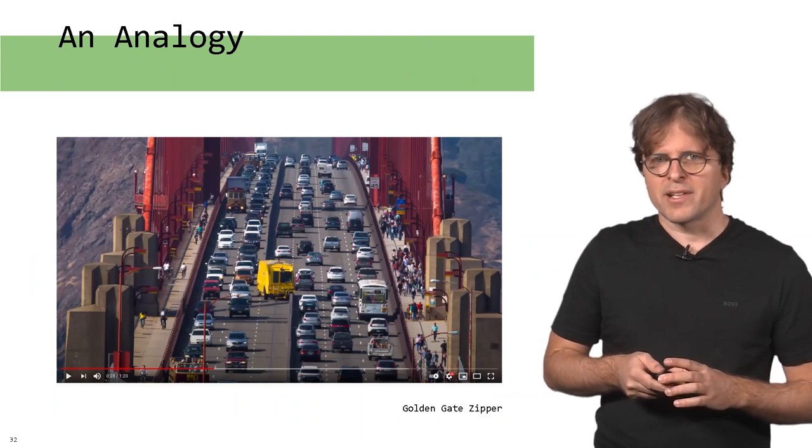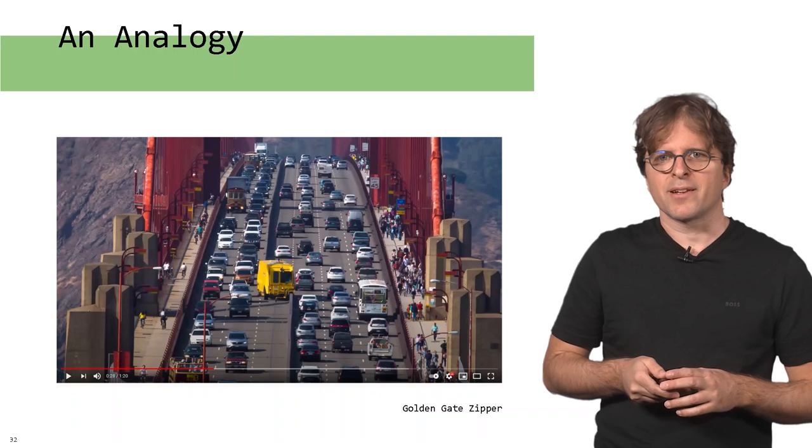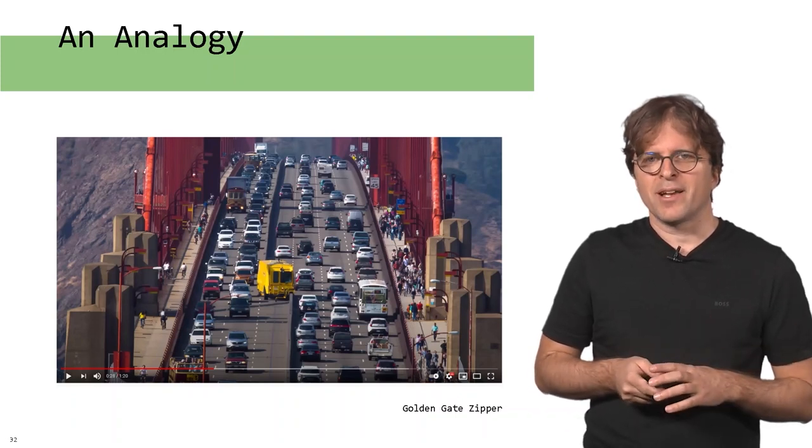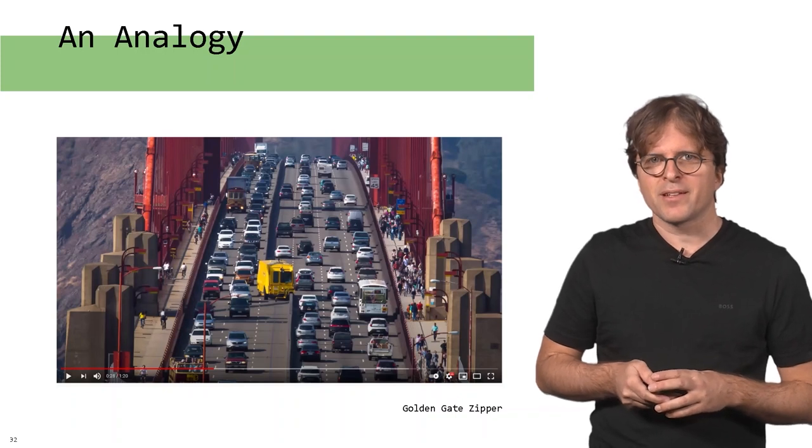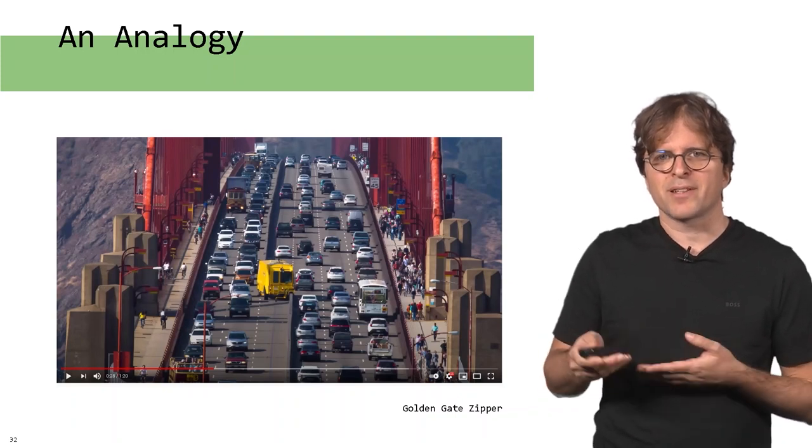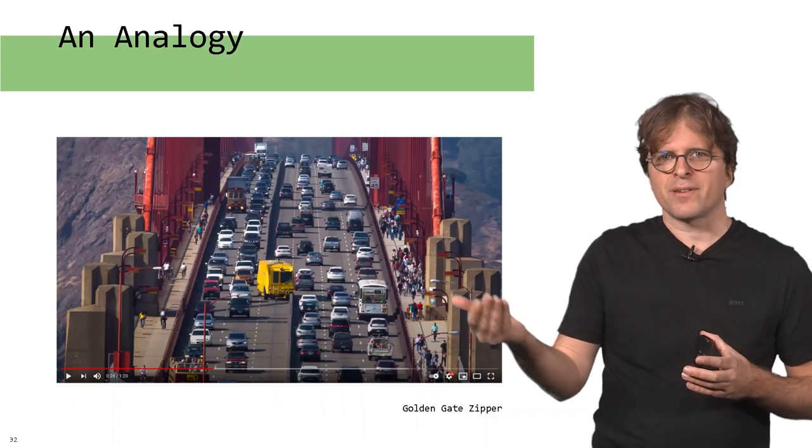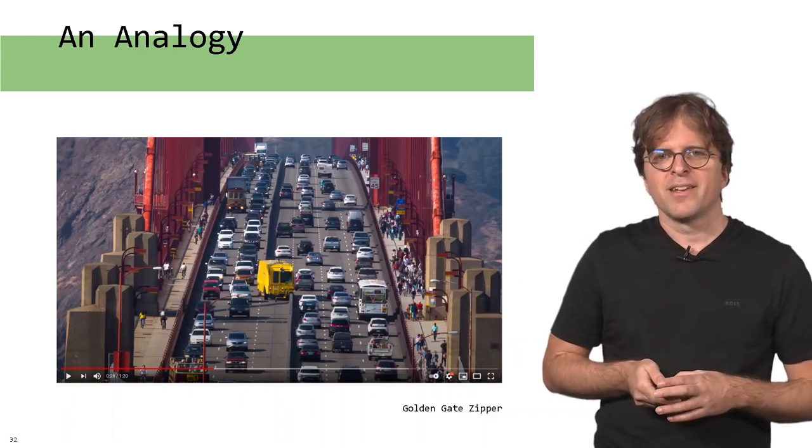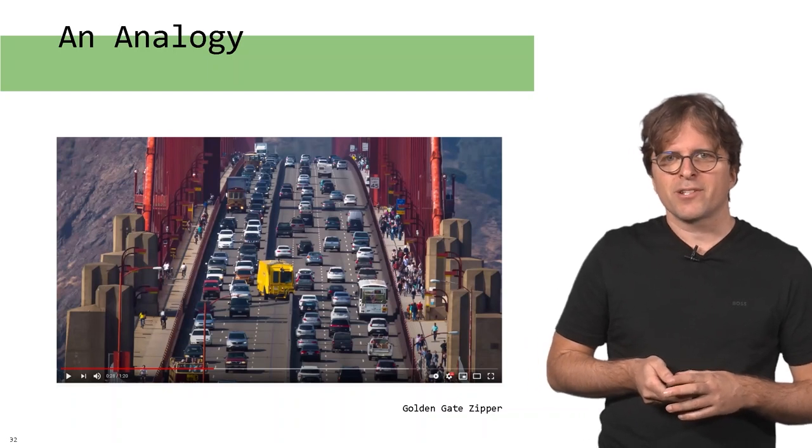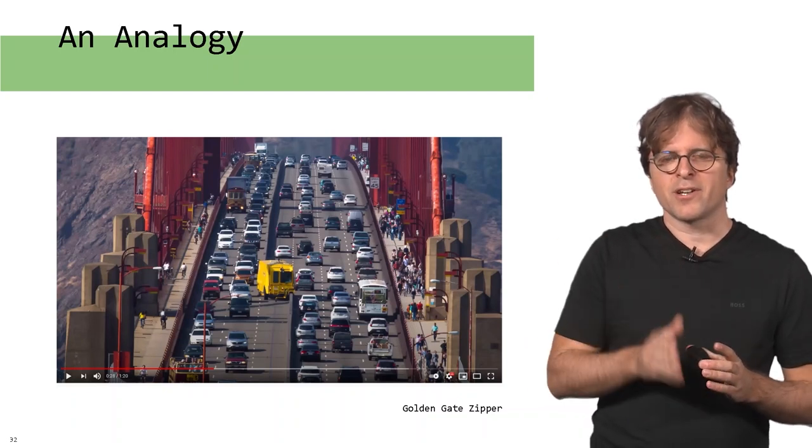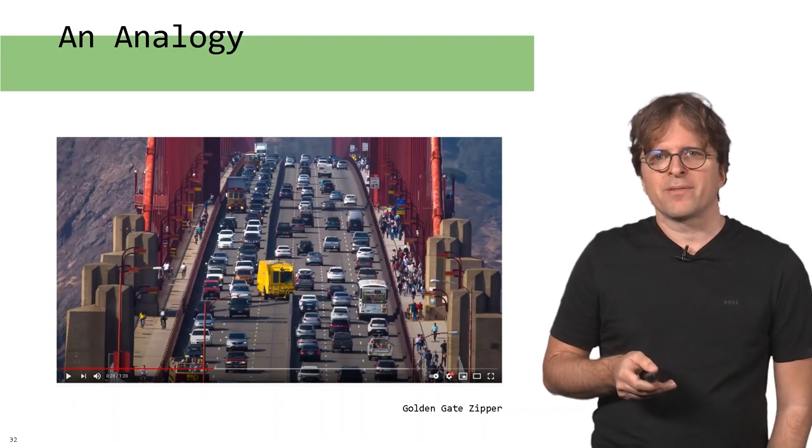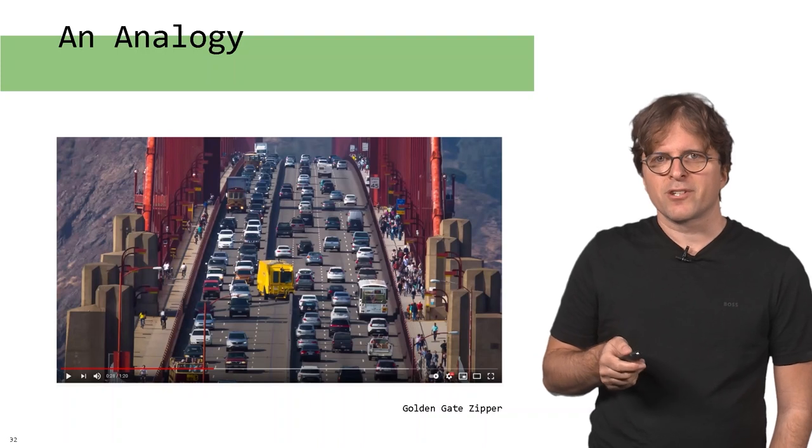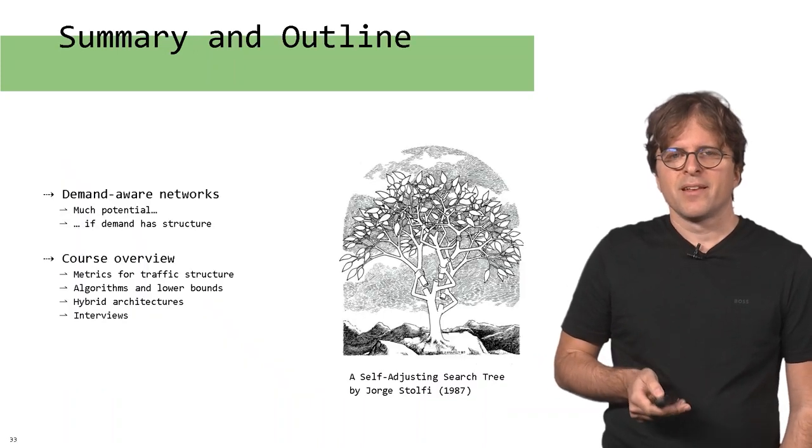Maybe as one interesting analogy, maybe some of you know the Golden Gate zipper. Going back to the analogy we had in the beginning with traffic, sometimes in the morning there's a lot of traffic in one direction, and in the evening in the other direction. On the Golden Gate Bridge, they have this solution where the car can change the number of lanes adaptively over the day. They can really have a demand-aware way of using this bridge resource.